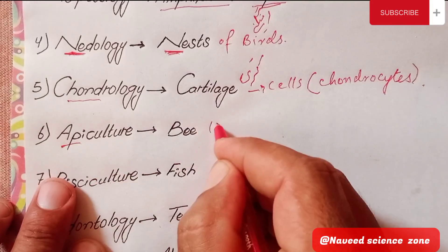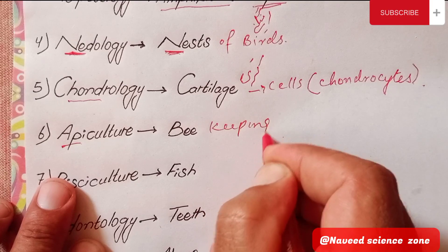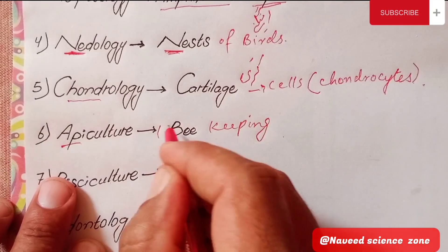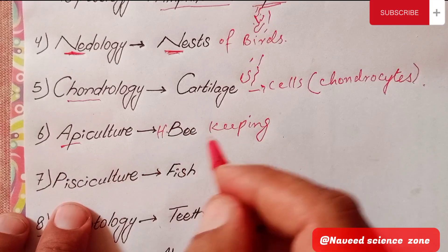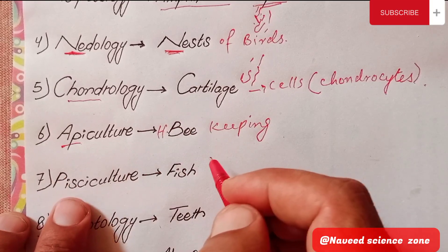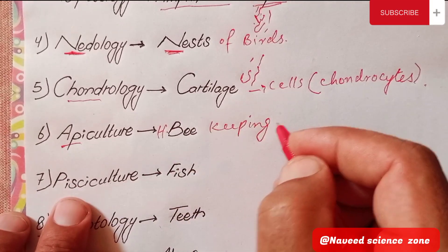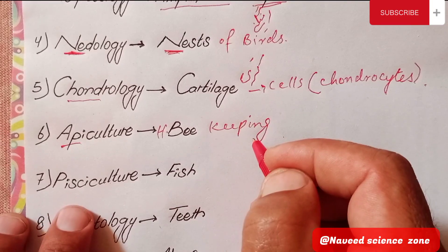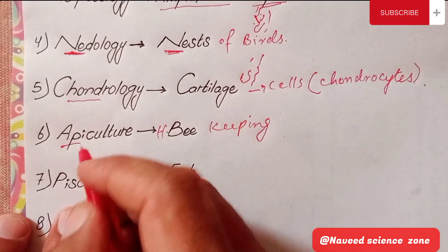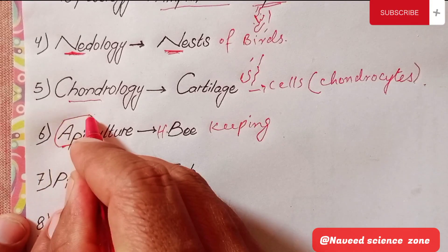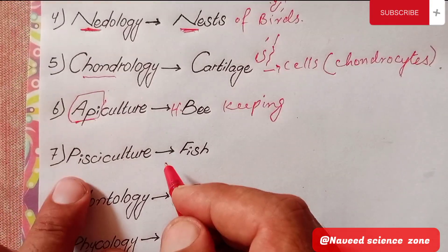The next branch is Apiculture, which means honey bee keeping. The branch of biology related to honey bee keeping is called Apiculture. The most common honey bee's scientific name is Apis mellifera. Apiculture is also known as bee culture or PC culture.